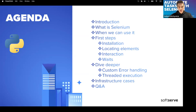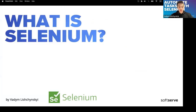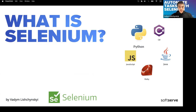What is Selenium in general? It's a framework, library, or tool — call it whatever you like — but it provides us the ability to use different scripts to run actions in our browser. We can write scripts in five languages: Python, C#, Java, Ruby, and JavaScript.